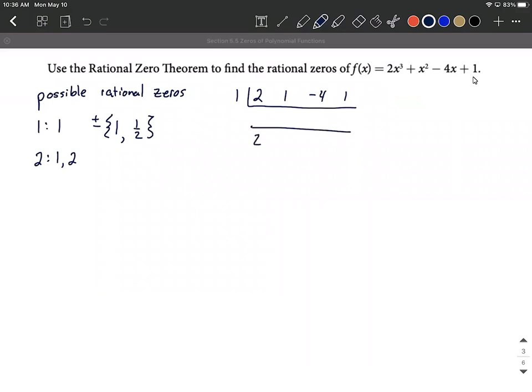And then let's bring the 2 down and then multiply. 1 times 2 makes 2. Add 1 plus 2 makes 3. Multiply 1 times 3 makes 3. Add negative 4 plus 3 makes negative 1. And then finally multiply 1 times negative 1 makes negative 1. Add those, you get a 0. This is what we're looking for, by the way, our remainder is going to be 0.